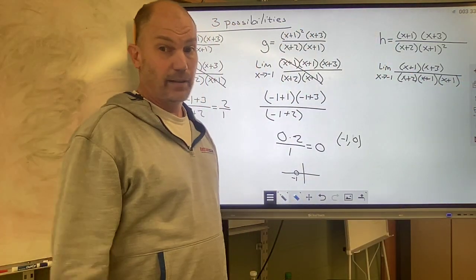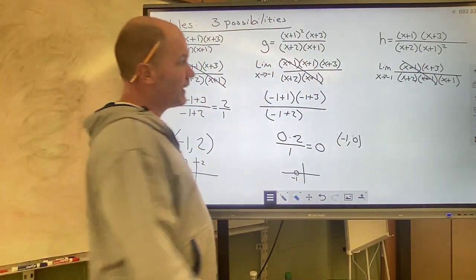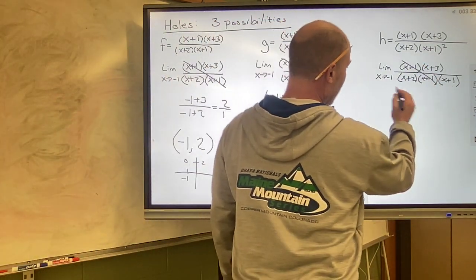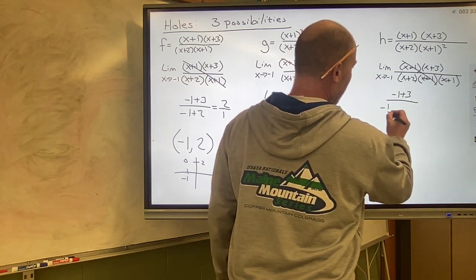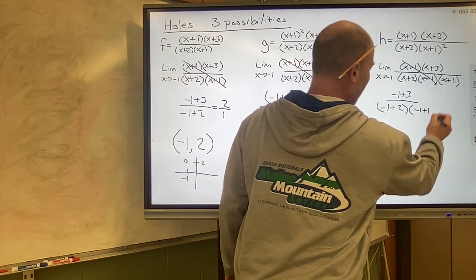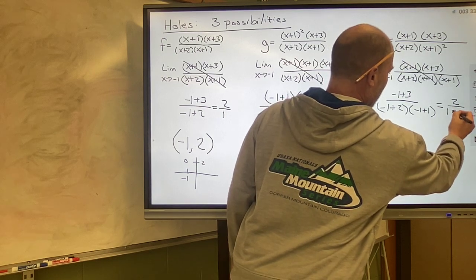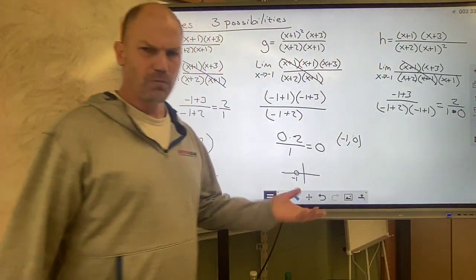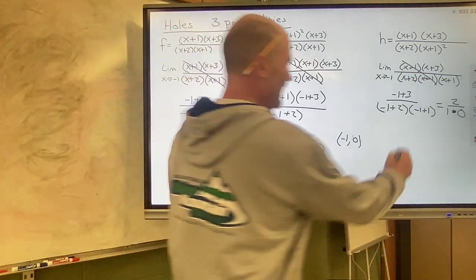We start out exactly the same way. We start canceling, and we cancel. And then we go to plug in. And then when we go to plug in here, what we'll get is negative 1 plus 3 over negative 1 plus 2 and negative 1 plus 1. And we'll get an answer of 2 over 1 times 0, which is 2 divided by 0, which is DNE.